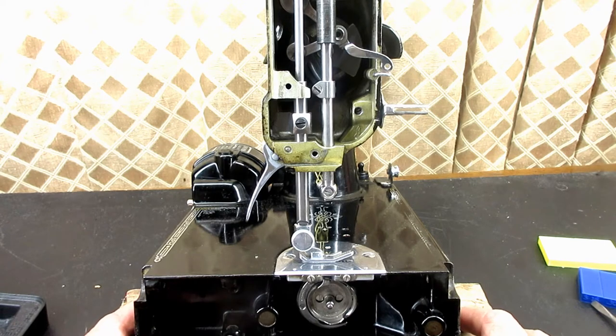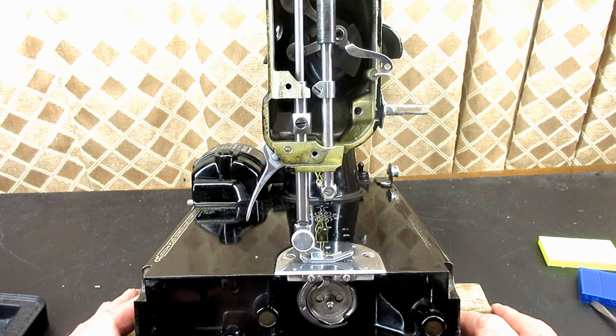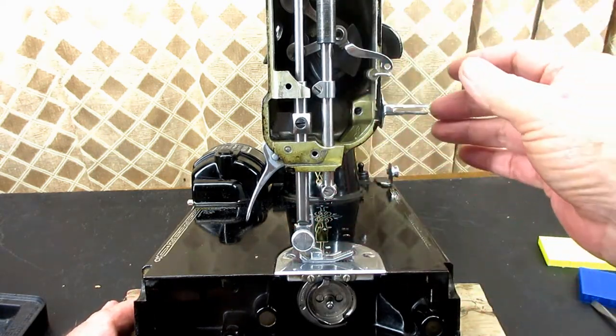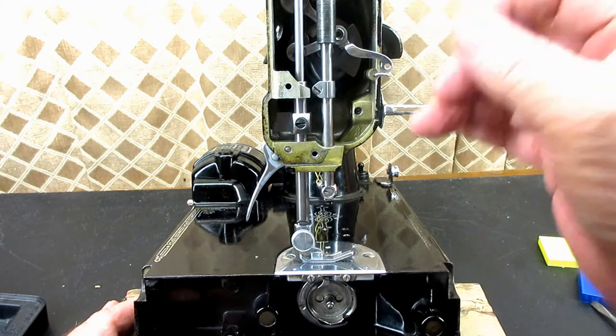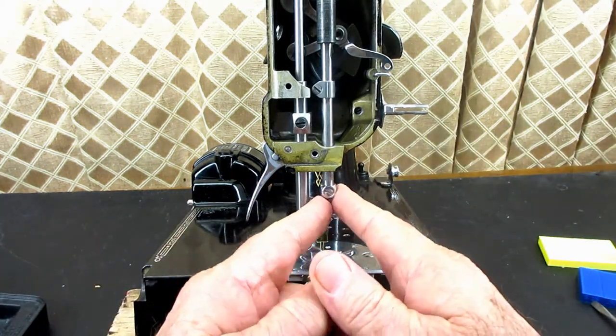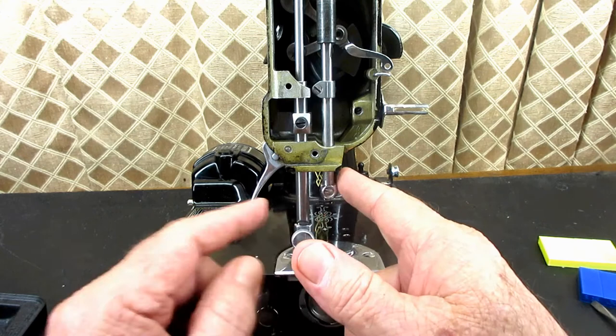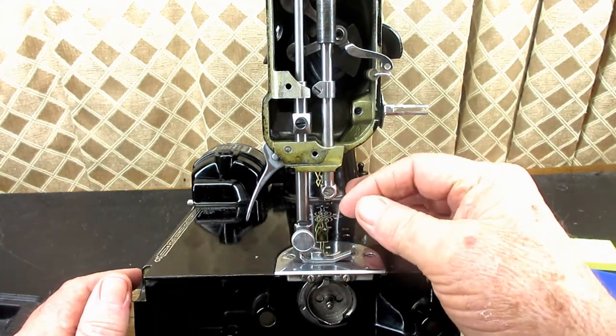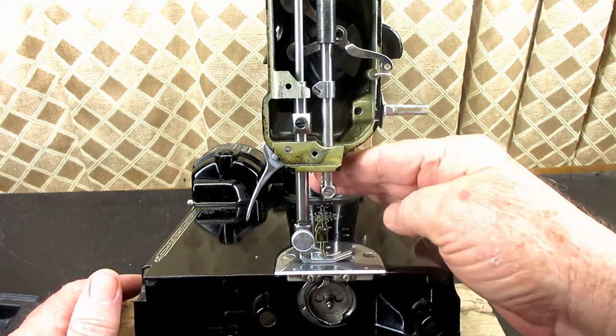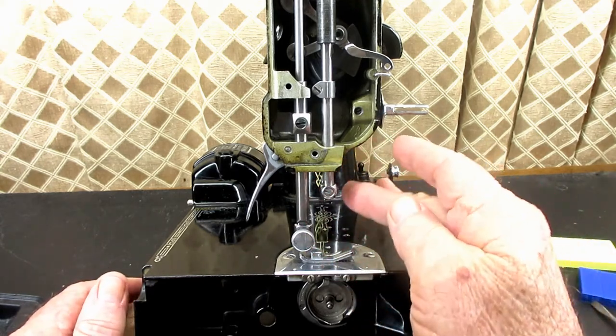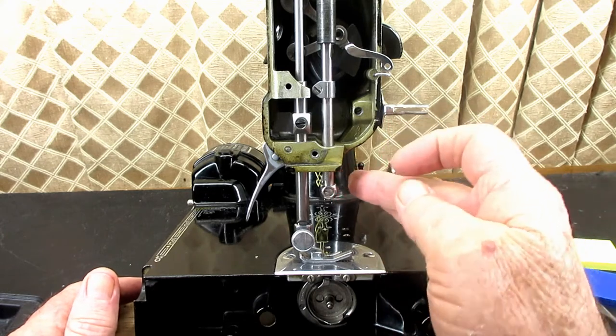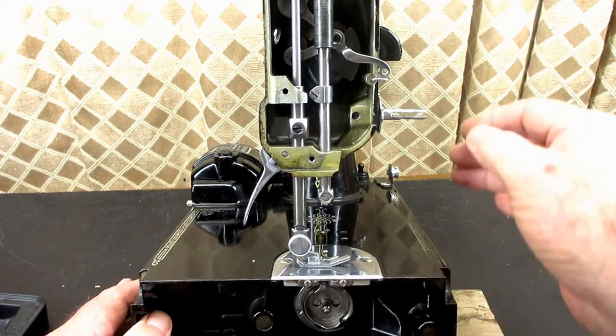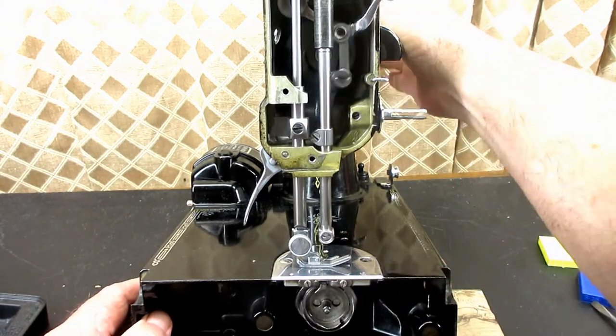I can't tell you how many needle bars I've taken out, cleaned, put back in, set the height, and then you have to align this needle bar properly so that the needle faces the hook properly. It can't be twisted because that can face the thread loop away from the hook and you start skipping stitches.